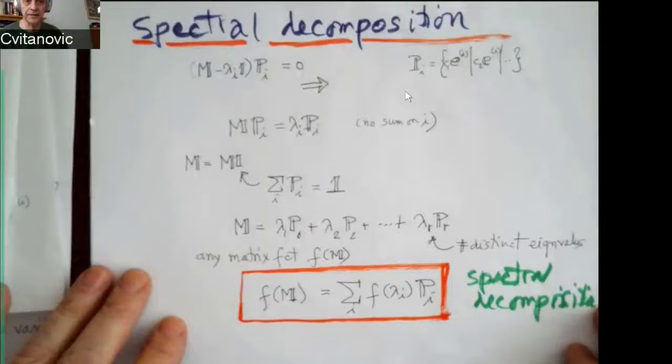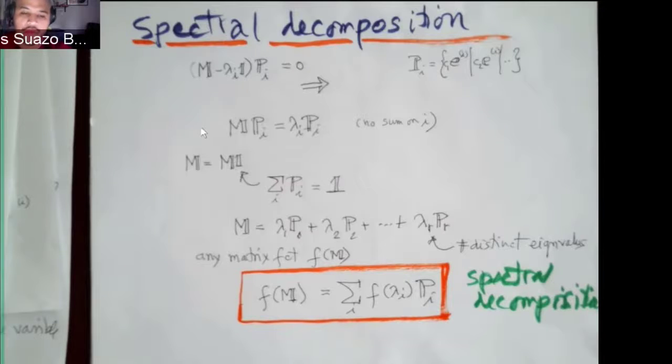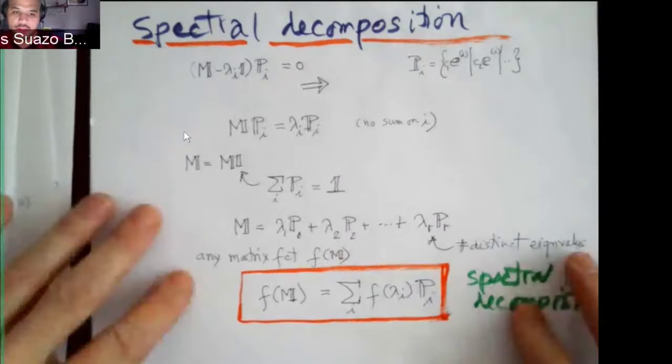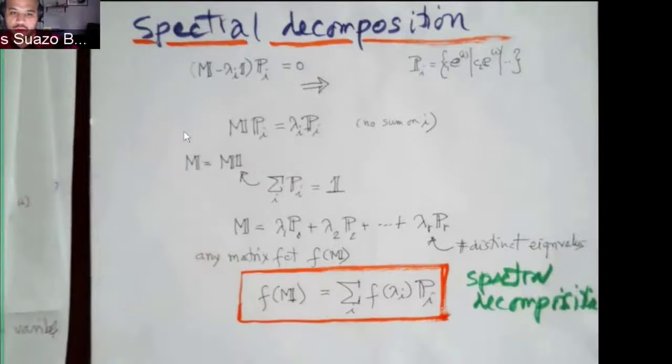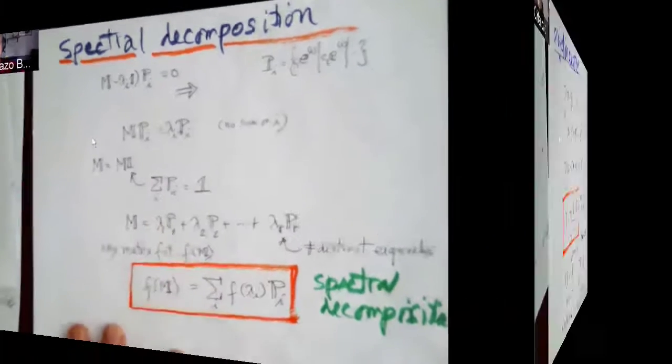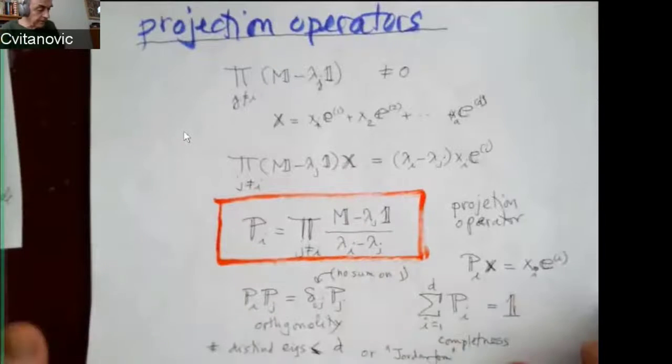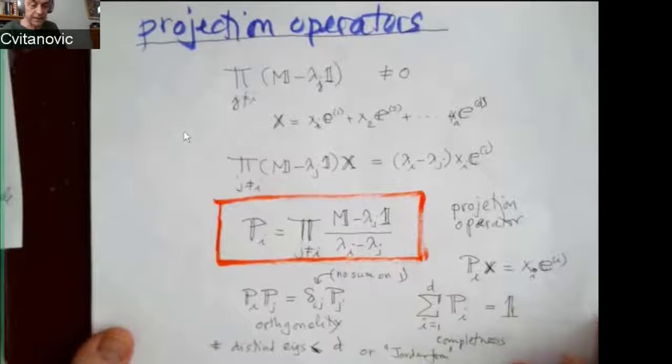Can you bring back the spectral decomposition? Are we discussing this? Yeah, so how do you go from the line that says M matrix equals M matrix times 1 to the line that says M matrix is equal to the sum of lambda I times the projection I? Projection operators have two very important properties, which you will always see in lots of applications.